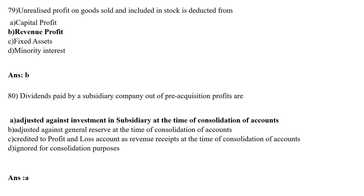Unrealized Profit on Goods Sold and Included in Stock is deducted from: Option A Capital Profit, Option B Revenue Profit, Option C Fixed Asset, Option D Minority Interest. The correct answer is Option B Revenue Profit. Unrealized Profit on Goods Sold and Included in Stock is deducted from Revenue Profit.